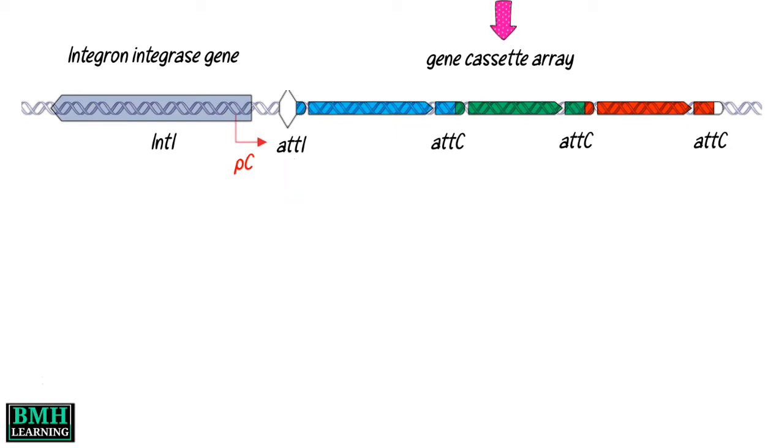Then there are gene cassettes which are sequentially inserted into an array via recombination between attI and the cassette associated recombination sites attC. Gene cassettes normally contain a single open reading frame expressed from the Pc promoter.